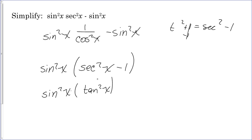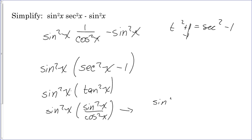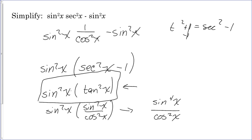You could leave the answer as sine squared x times tangent squared x, and most people would. But if you want to simplify further, substitute tangent squared as sine squared x over cosine squared x, multiply the numerators, and you get sine to the fourth of x over cosine squared of x. Either form is acceptable — I wouldn't count either wrong — but at a minimum I would want you to reach sine squared x times tangent squared x.